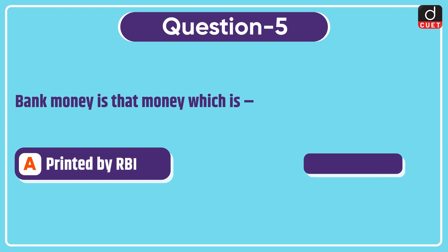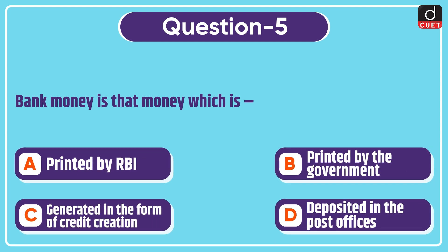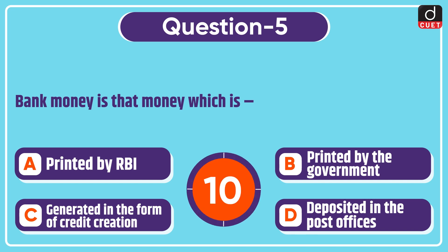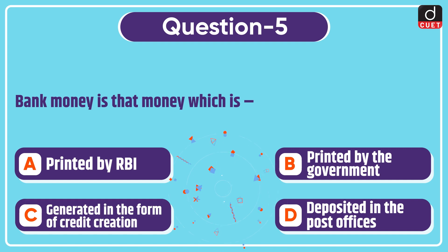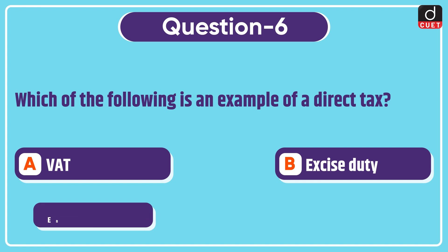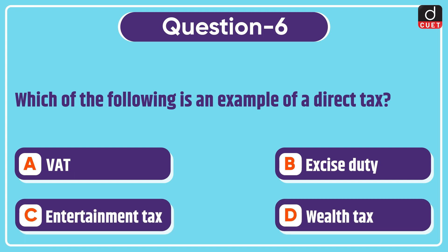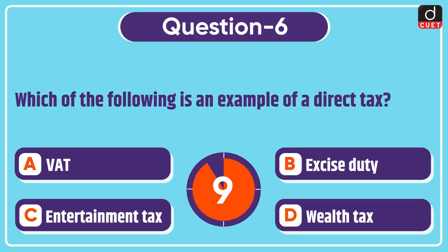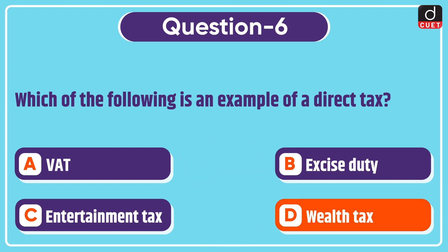Next question is: bank money is that money which is printed by RBI, printed by the government, generated in the form of credit creation, or deposited in the post offices? Next question is: which of the following is an example of a direct tax? VAT, excise duty, entertainment tax, or wealth tax? The correct answer is option D, wealth tax.